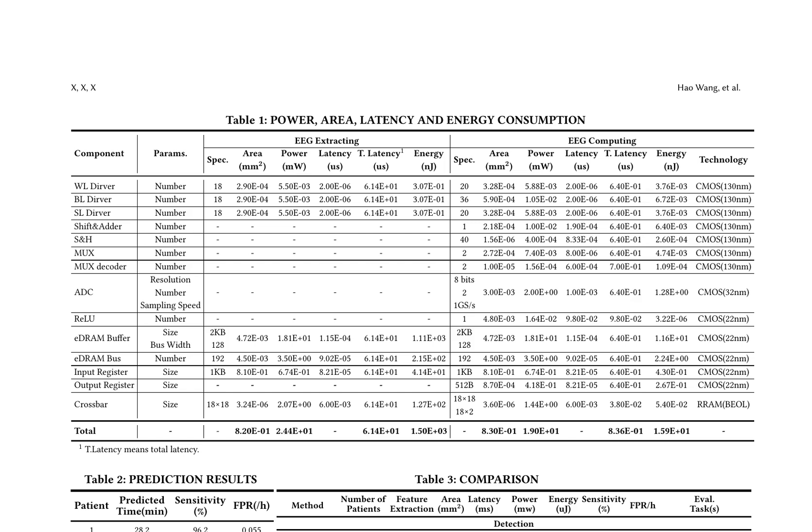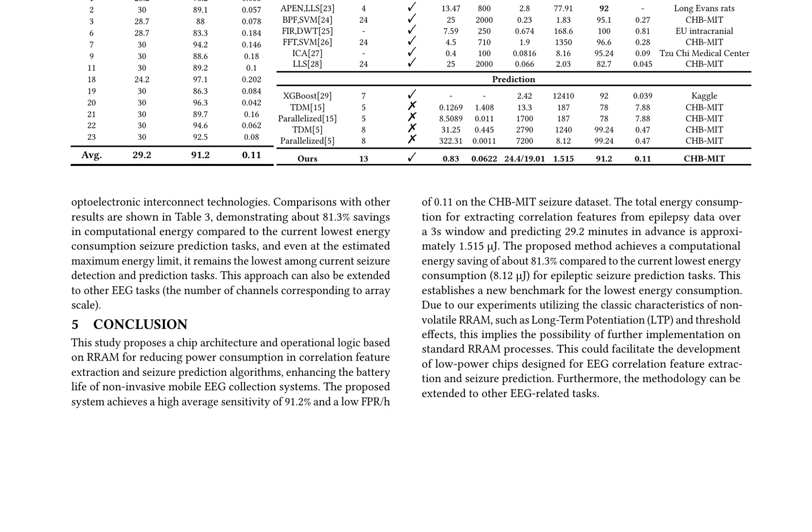The system's performance is evaluated on the CHB-MIT seizure dataset, achieving a high average sensitivity of 91.2 percent and a low false positive rate (FPR/H) of 0.11. Patient-specific prediction results are presented in Table 2, demonstrating the system's efficacy in achieving high sensitivity and low FPR. A comprehensive comparison with other seizure prediction methods is provided in Table 3, revealing a significant reduction in computational energy consumption, with a savings of approximately 81.3 percent compared to the current lowest energy consumption method. The proposed system's ability to reduce power consumption while maintaining high performance makes it an attractive solution for EEG correlation feature extraction and seizure prediction.